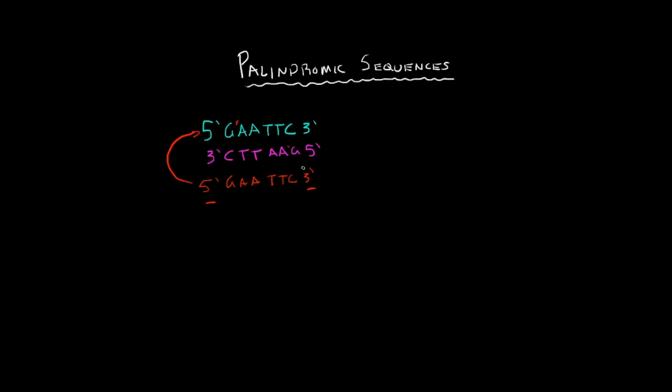So a palindromic sequence is really important for genetics research, once again, and being able to find and identify these restriction enzymes or restriction endonucleases and use them to our advantage in genetics or cell biology or any kind of scientific field research where you're dealing with DNA.